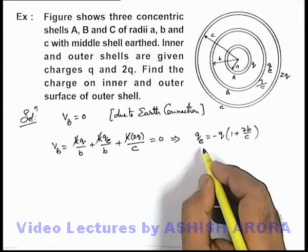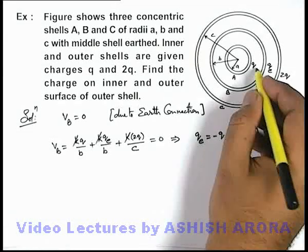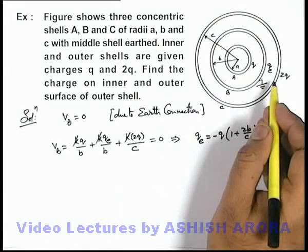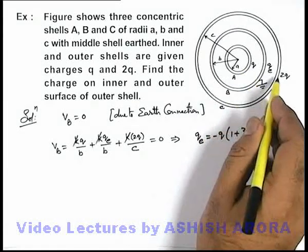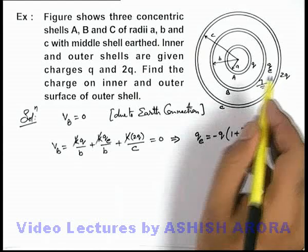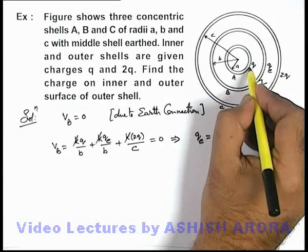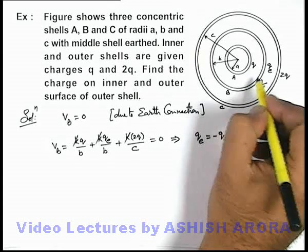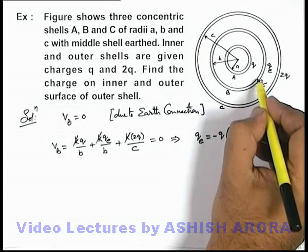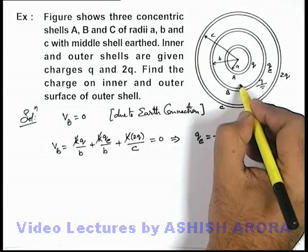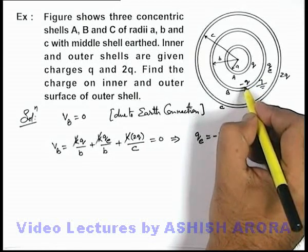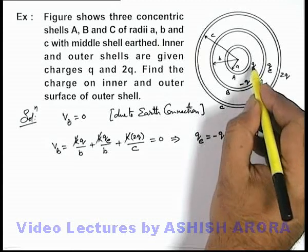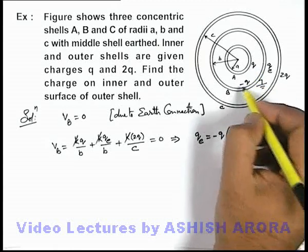This is the charge supplied by earth onto the middle shell B. Now, using the flux termination concept, the overall flux of shell A will terminate on the inner surface of shell B, because no electric field line can pass through a metal surface. So the induced charge on the inner surface of shell B is exactly equal to −q.